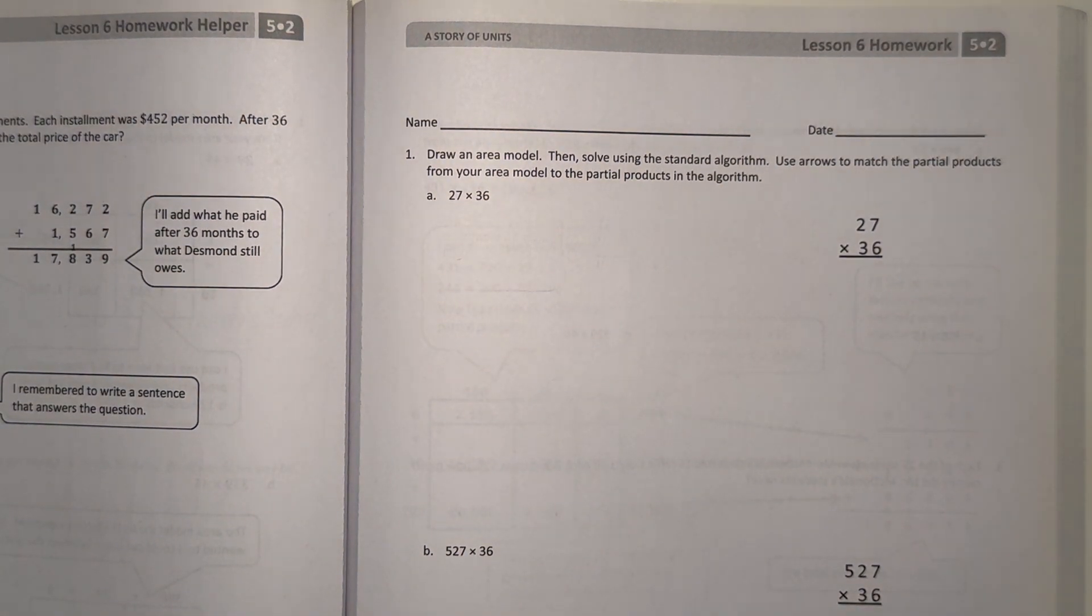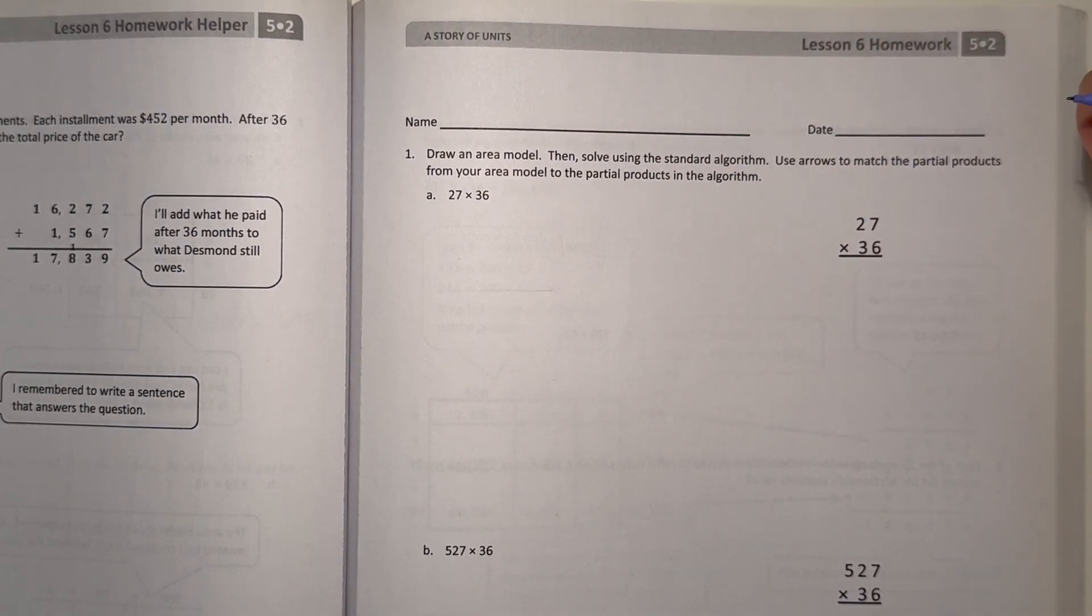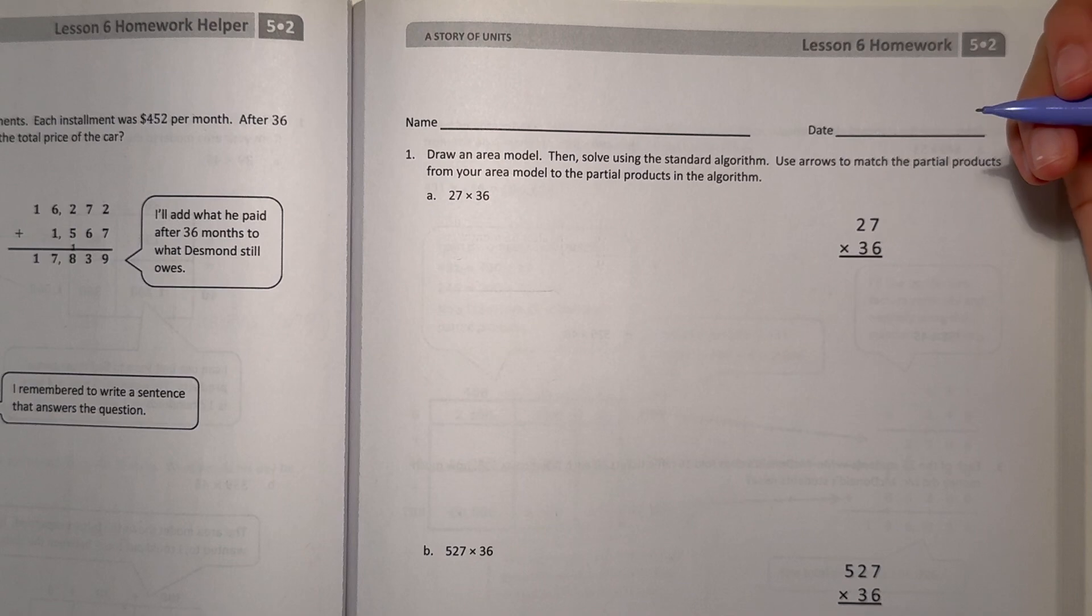Number 1, draw an area model, then solve using the standard algorithm. Use arrows to match the partial products from your area model to the partial products in the algorithm. Alright, so again, like I always say, one of the most important things when doing a math problem is understanding the problem itself.